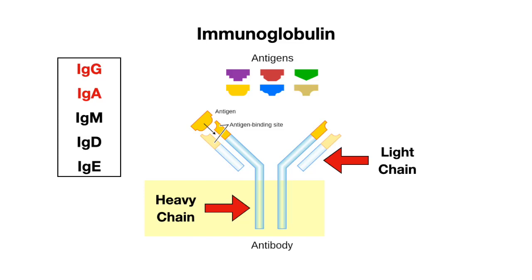Notice that IgG and IgA are highlighted here. This is because in multiple myeloma, there is only one type of immunoglobulin that is going to be elevated. The type varies from person to person, but IgG is the most common, and then the next most common is IgA.